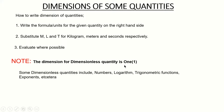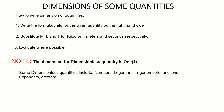The dimension for dimensionless quantities is one. Some examples of dimensionless quantities include numbers, logarithms, trigonometric functions, and exponents. So when you see numbers in a dimension expression it becomes one, when you see logarithm it becomes one, when you see trigonometric functions it becomes one.